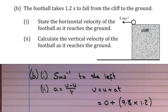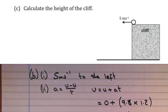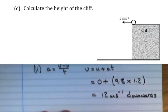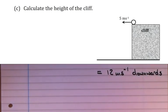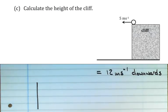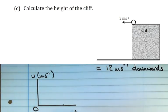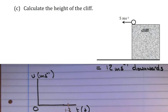One last part — part C — which asks us to calculate the height of the cliff. There are a few ways to work this out. I would say the easiest method is to draw a velocity-time graph for the vertical velocity only. Vertically, with velocity in meters per second on the y-axis and time in seconds on the x-axis, we know that in 1.2 seconds the vertical velocity increases uniformly from zero.